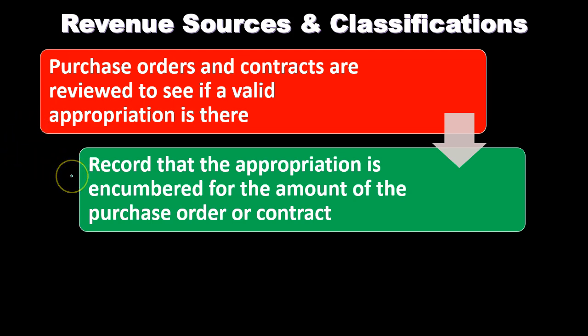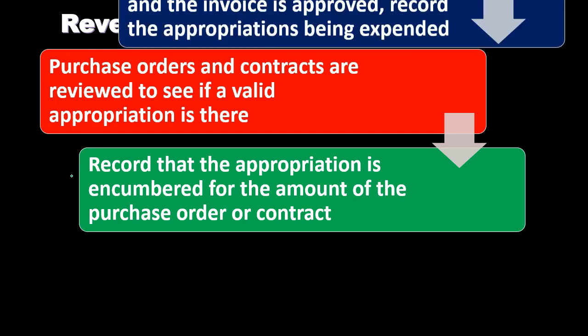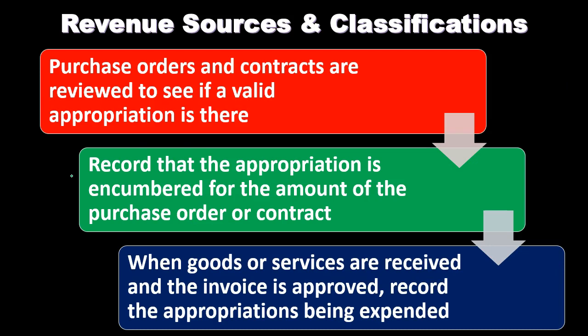This is basically saying: the budget has been committed by approving a purchase order or contract. The encumbrance has now been approved even though we have not yet paid for it. We can't record the actual expense under a normal accrual system because we haven't received anything, but we want to record that we've committed to the purchase order or contract. Then when goods or services are received and the invoice is approved, we record the appropriations being expended — reversing the encumbrance and recording the actual expenditure by debiting expenditures and crediting a payable or cash.